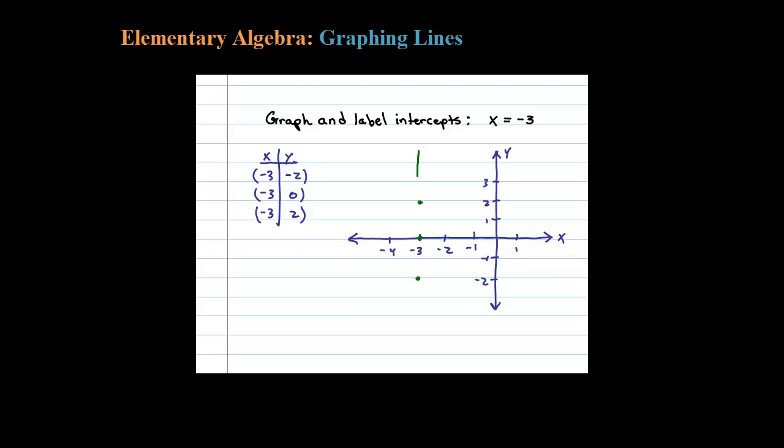Two points determine a line. When I plot these points out, you can see the line that it gives us here is a vertical line, and that's always going to be the case whenever you have X equals a number. You're going to get a vertical line.